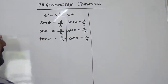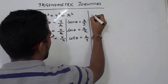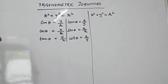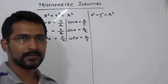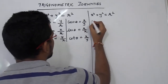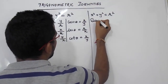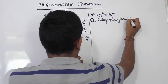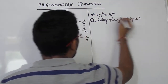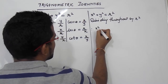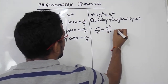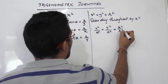Now we are going to derive the different identities. We have the relation x² + y² = r². If we divide this equation throughout by r², what we get is: x²/r² + y²/r² = r²/r².